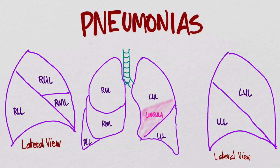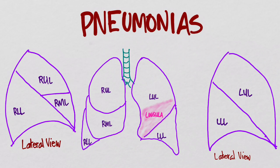The first thing we should talk about is the anatomy of the lungs on the X-ray. You can see here I've drawn the lungs from a PA view, showing the right upper lobe, the right middle lobe, and the right lower lobe, with the various fissures — the horizontal fissure and the oblique fissure on this side.